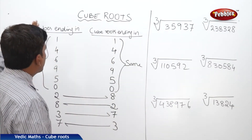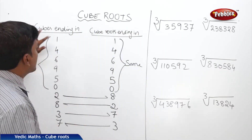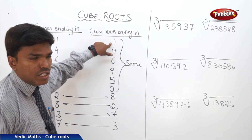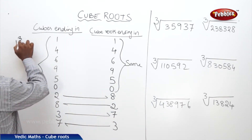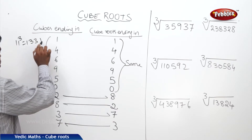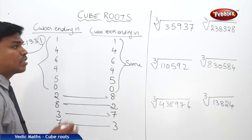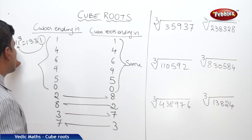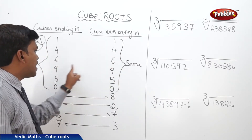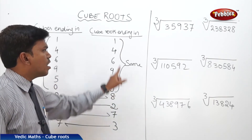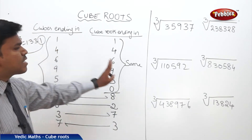Let's discuss the table. If a cube number is ending in 1, its cube root should also end in 1 only. For example, 11 cubed is 1331 — it's a cube number ending in 1, so its cube root also ends in 1. Similarly, if a cube number ends in 4, its cube root ends in 4. For digits 1, 4, 6, 9, 5, and 0 — the cube root ends in the same digit.